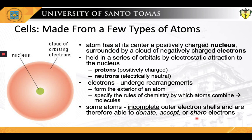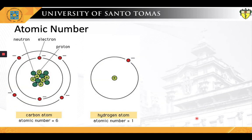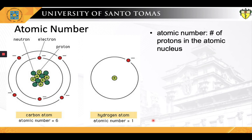Can you recall what the atomic number means? The atomic number, also known as the proton number of a chemical element, is defined as the number of protons found in the nucleus of every atom of that element. More importantly, the atomic number uniquely identifies a chemical element and is identical to the charge number of the nucleus. Thus, in an uncharged atom, the atomic number is also equal to the number of electrons.